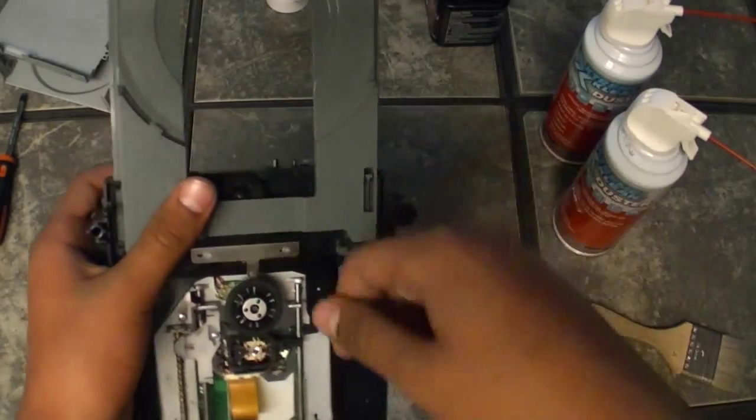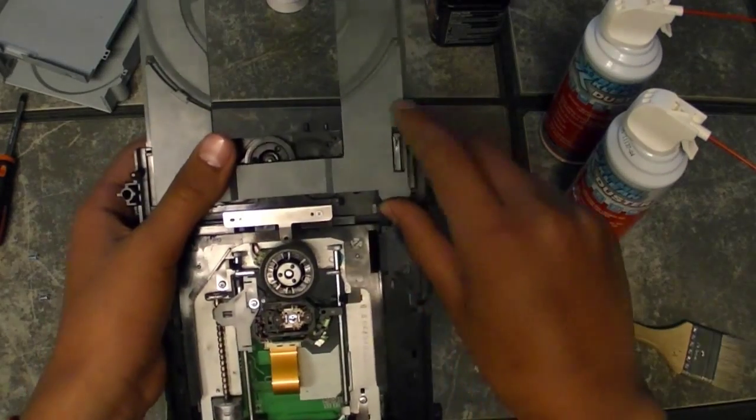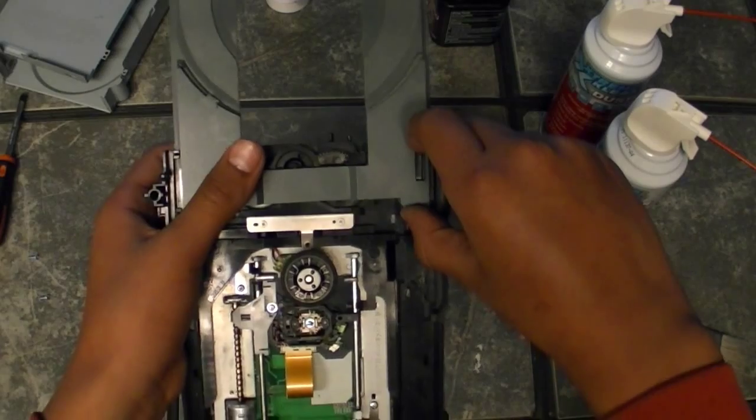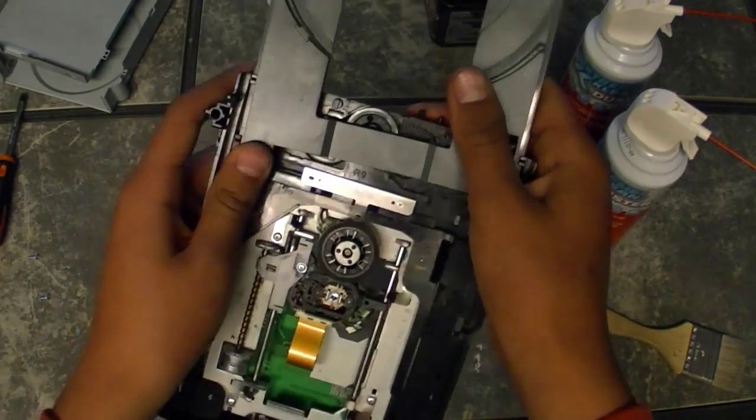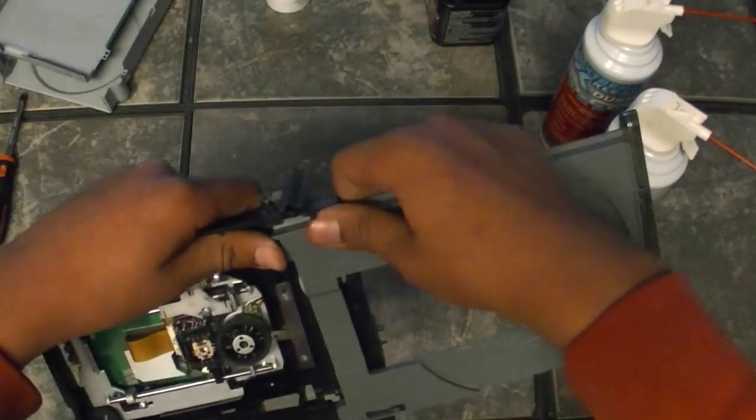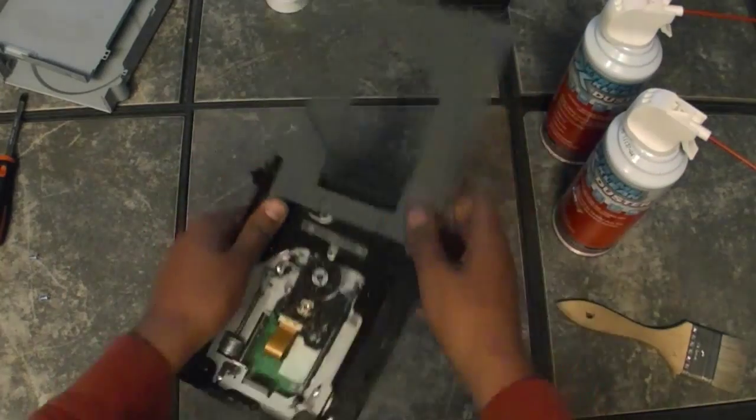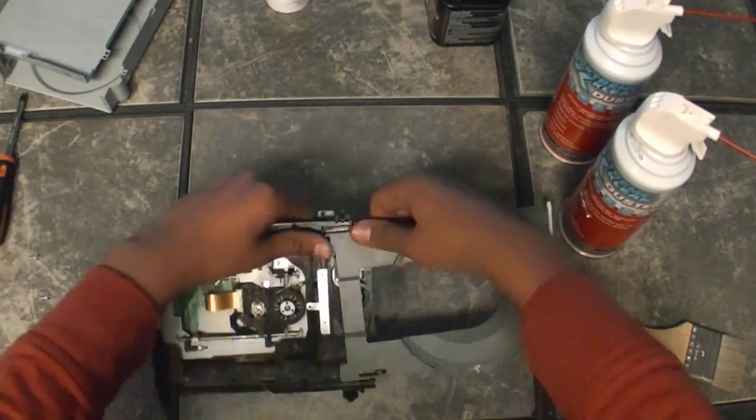So what you want to do first is, if you can see there's this plastic, you don't need to do this step but I want to clean around the gears. So you pull it up a little, not too much because you could break it, and then you pull this part back, not too hard neither because you could break it.